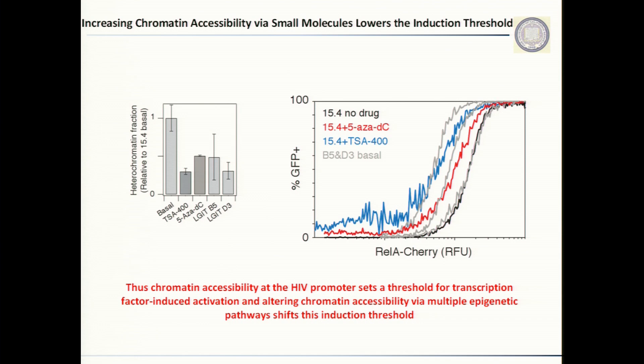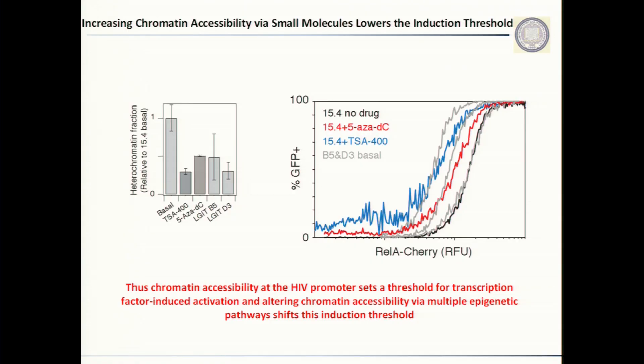To show that the chromatin environment plays an important role in setting this threshold, we hypothesized that if we take an extremely repressed clone and add a small molecule such as an HDAC inhibitor to open up the chromatin, the chromatin environment around this highly repressed clone should mimic that of a less repressed clone. For example, taking clone 15.4 and stimulating with the HDAC inhibitor TSA, we see that the DNase-1 levels for TSA-treated 15.4 are similar to clone D3. We then found that 15.4 unstimulated shifts to mimic clone D3 when treated with TSA, suggesting that the chromatin environment sets the threshold for activation of gene expression.